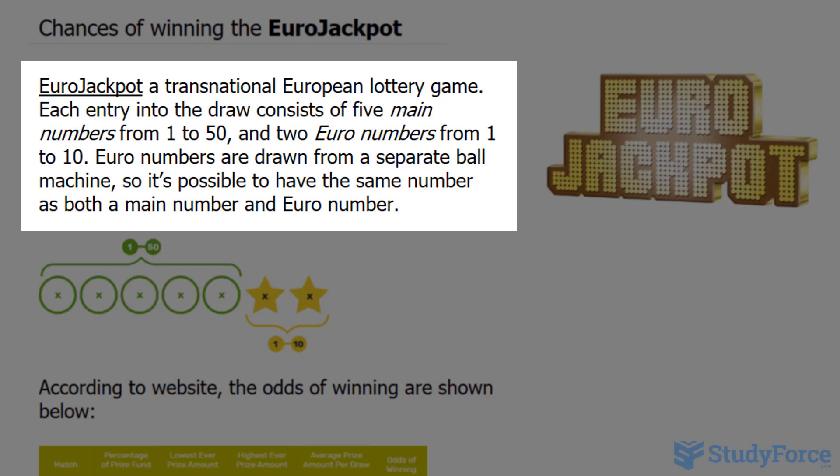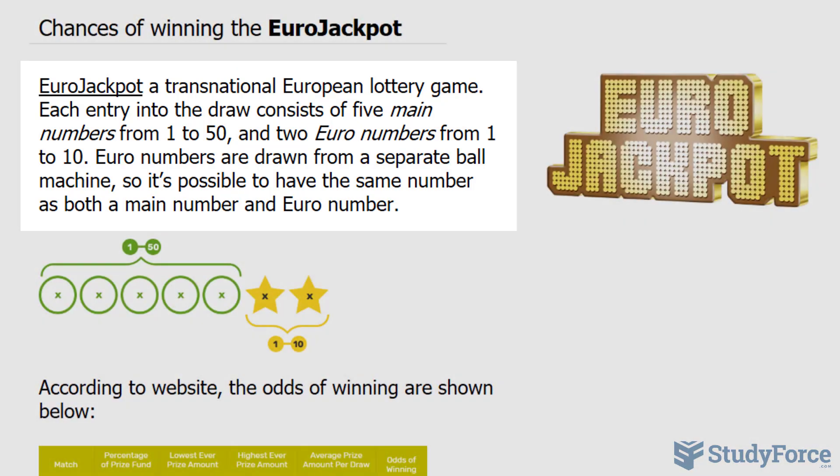Each entry into the draw consists of 5 main numbers from 1 to 50, and 2 Euro numbers from 1 to 10. Euro numbers are drawn from a separate ball machine, so it's possible to have the same number as both a main number and a Euro number.